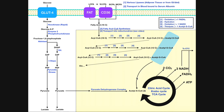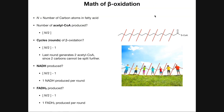Now let's talk about the math of beta-oxidation, which can be important. We have our same 16-carbon fatty acid, and we want to determine: how many acetyl CoAs are produced, how many rounds of beta-oxidation are required to completely metabolize it, how many NADHs are produced, and how many FADH2s are produced.